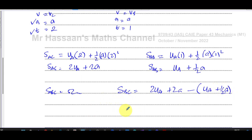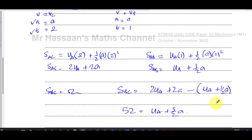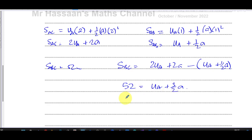So SBC equals 52. That gives UA plus three-halves A equals 52. Multiplying everything by two to simplify: 104 equals 2UA plus 3A. That's equation one.